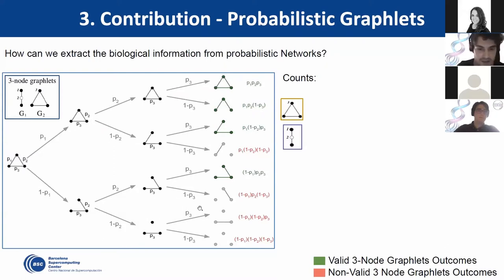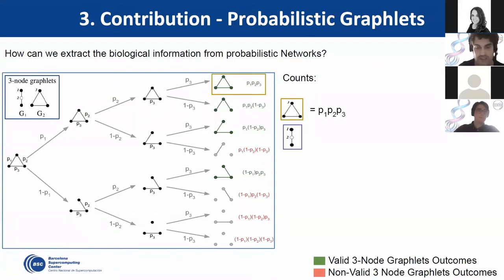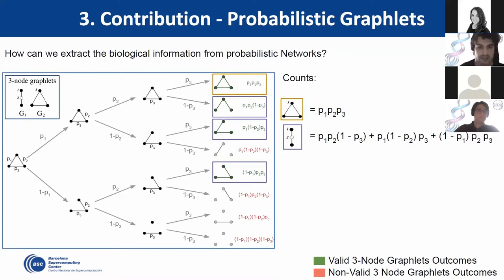Not all outcomes are going to be valid for three-node graphlets. In green we have those that are valid, and in red those that are not — because one node is disconnected, it no longer forms a three-node graphlet. When we count the valid probabilistic graphlets, we get expected values for each graphlet in the network. For a triangle, we have one option: all edges existing at the same time. For the line, we have three options depending on which connection is missing. At the end, we store this information as a graphlet degree vector and can perform different experiments with it.